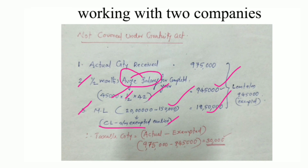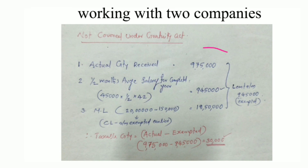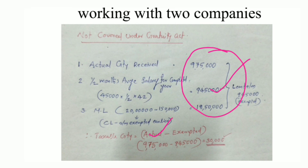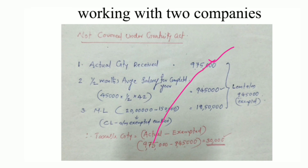Taking the least of the three figures, the exempted amount is Rs. 9,45,000. The taxable gratuity is Rs. 9,75,000 minus Rs. 9,45,000, which gives Rs. 30,000 as taxable gratuity.